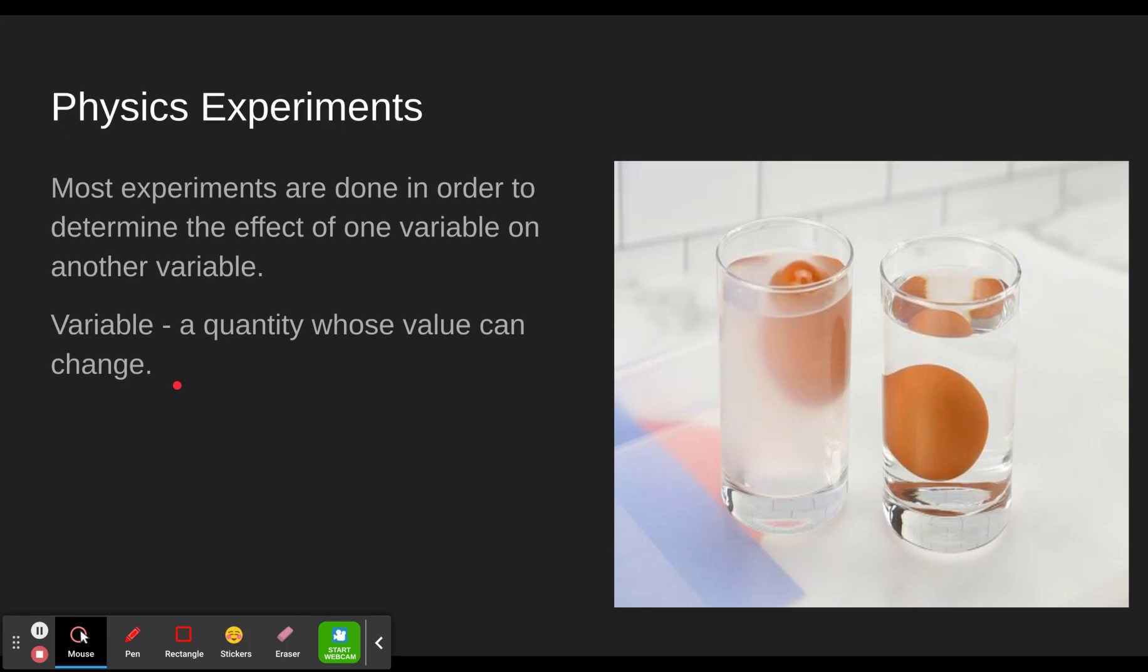Distance, you could have a distance of 6 meters, of 12 meters, of 14 meters, so that is a variable because it is a quantity. The distance is a quantity and that value can change depending on the situation. So notice now let's jump back. Most experiments are done in order to determine the effect of one variable on another variable.